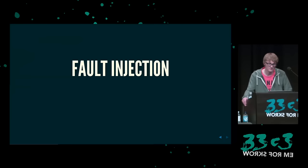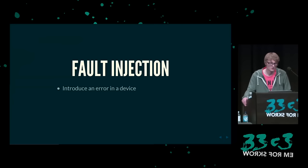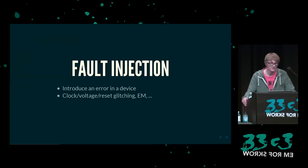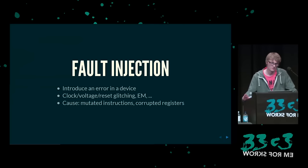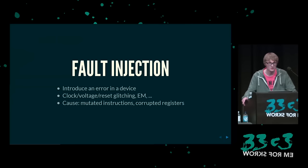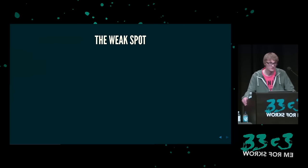Man bringt einfach einen Fehler in das Gerät ein, indem man an der Spannung oder an der Uhr herumspielt oder mit Elektromagnetismus etwas verändert. Man möchte eine mutierte Instruction oder kaputte Register haben — nicht einfach nur einen Lock-Up, sodass das System crasht. Wir wollen also einen Glitch in Boot-0 einfügen und müssen ein angenehmes Ziel finden — einen richtig schönen Schwachpunkt.